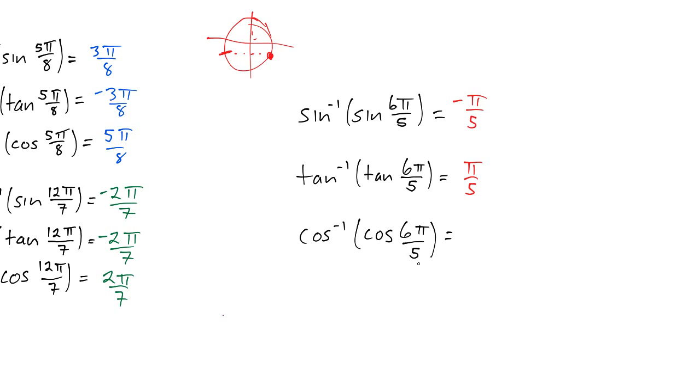And for cosine inverse of cosine of 6π over 5, again, we need to change the position, because we're not in the first or second quadrant. So, we'll reflect over the x-axis, that'll keep the x value the same. And so now, instead of going 1 more fifth of π from the negative x-axis, we need to back up 1. So instead of 5π, we go back 1, that would be 4π over 5.